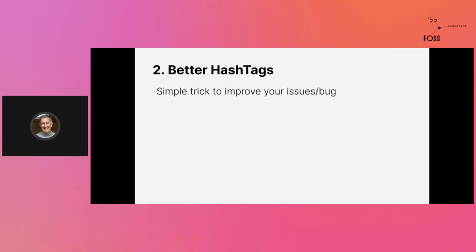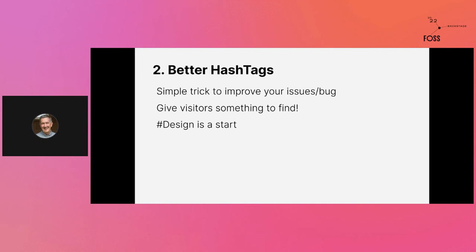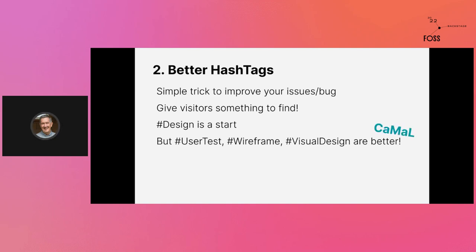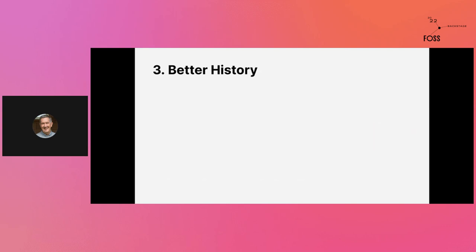Just start small — this is the easiest one. You literally just need a welcome page that says we are looking for UX designers. That just lets them know they're wanted, and that's a very powerful thing. Once you get that in place, you can grow it over time. Better hashtags: a simple trick to improve your issues and bug reporting is to just have a hashtag so you can tag things in your issues and bugs so people can find them. Hash design is a start, but I'd recommend breaking it up a little more — user tests, wireframe, visual design. You actually have to use them and set an example for the team. If you don't use them, no one else will.